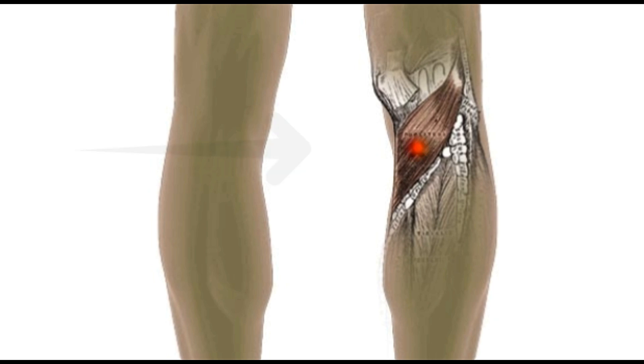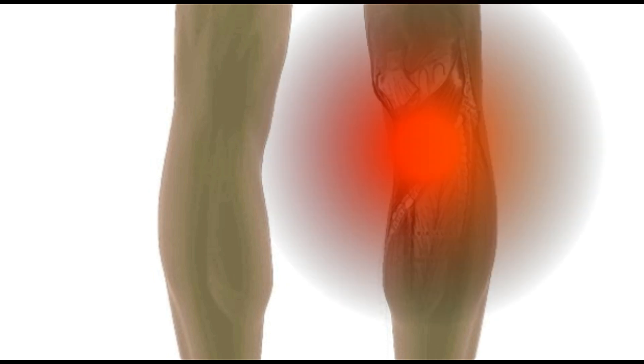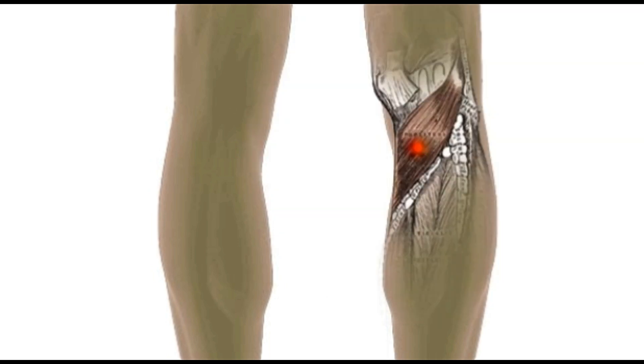Trigger point occurs right in the centre of the popliteus muscle and the pain that you feel is in the back of the knee, just around that trigger point. You'll notice this pain most especially if you're crouching or if you're walking downhills or downstairs.